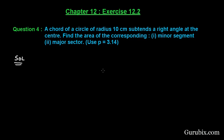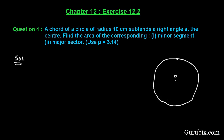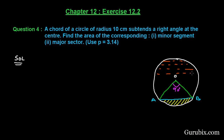First of all, let us draw the rough sketch of the figure using the information given in the question. Suppose this is the circle and this is the center. Here we have a chord AB. This chord subtends a right angle at the center — that is 90 degrees. We have to find the area of the minor segment, shown here, and this region is the major sector.